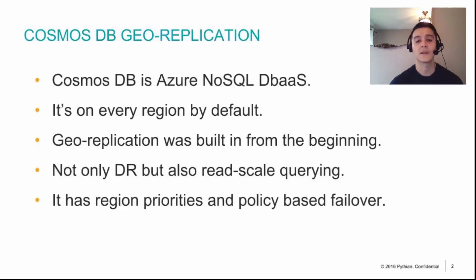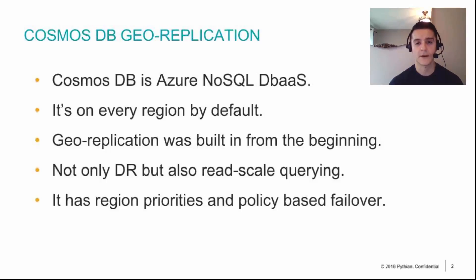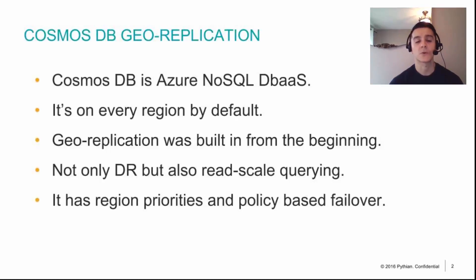You can also set failover priorities. For example, if you have a large mass of users in a particular location, you can configure the failover order so that the first failover goes to a region still close to your users, and the next one to a region a little farther, and so on. Let's go to the demo and see how to set up geo-replication for Cosmos and how it impacts latency for read-only queries when we pick a region close to where we are.